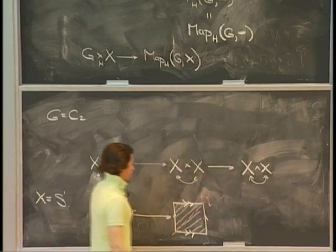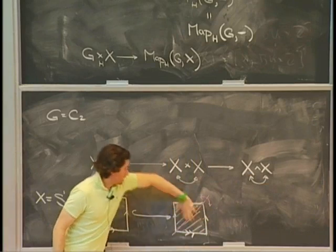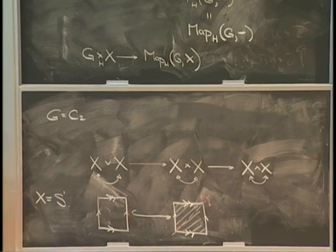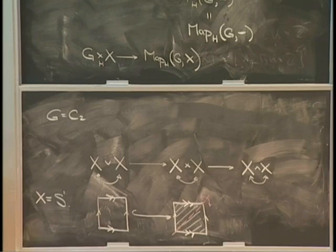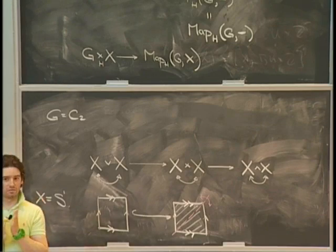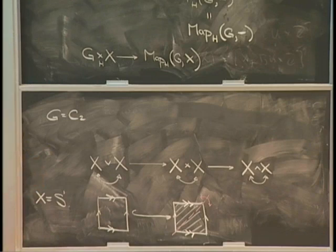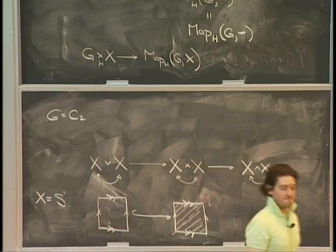I want to understand what X smash X is. This is the torus — this square — but then I've crushed out the entire boundary circle. What is that? It's S^2. What's the action? Is the action trivial? No — it's one you'd actually be able to identify. The action swaps the hemispheres.